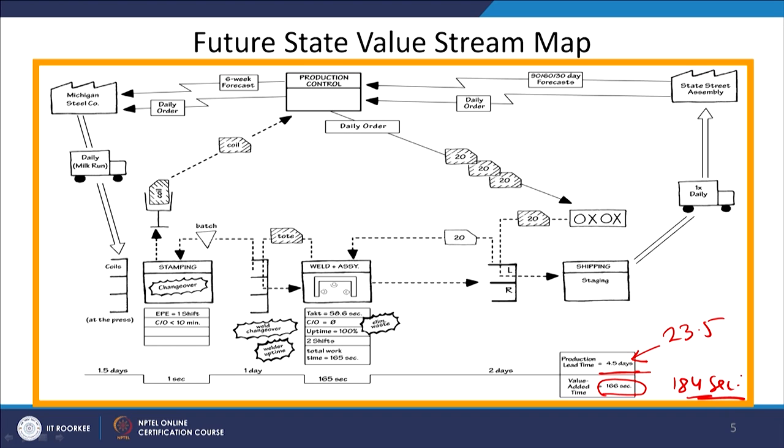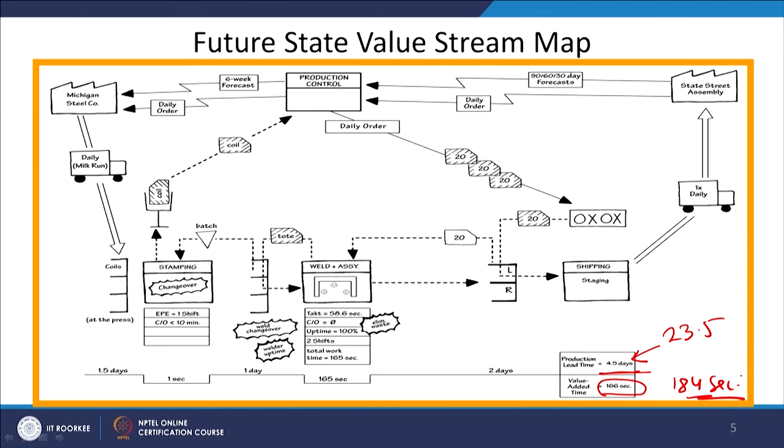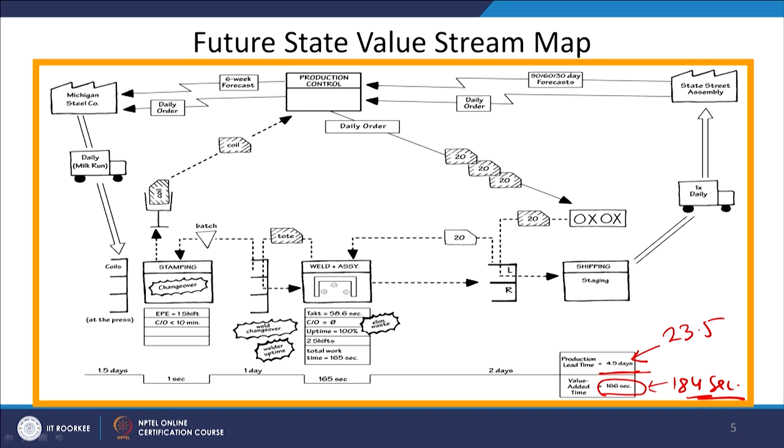From 23.5 days we are now able to reduce this lead time to 4.5 days. It is not 100 percent only value-added activities — there are still certain non-value-added activities. But as part of an ideal situation, you may still improve further. Earlier the value-added time was 184 seconds; we have squeezed some value-added activities wherever possible, reducing the time taken by them. So this 184 seconds reduced to 166 seconds — not only are you targeting waste activities, you may target your value-added activities also.